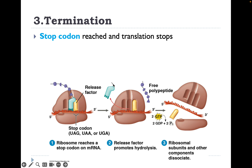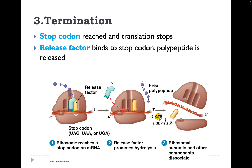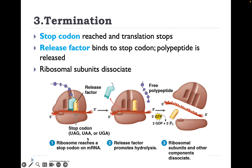Termination occurs when the stop codon is reached and translation stops. A release factor binds to the stop codon and the polypeptide is released. There are a few stop codons — slightly more variation than with a start codon. After the release factor and polypeptide are released, the ribosomal subunits dissociate, freeing the small subunit for another mRNA molecule to attach.